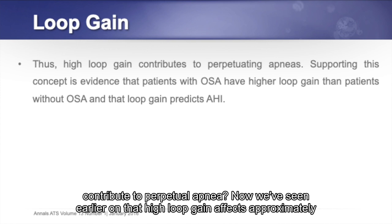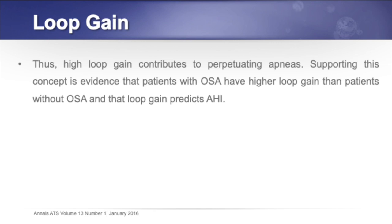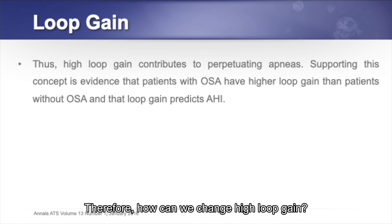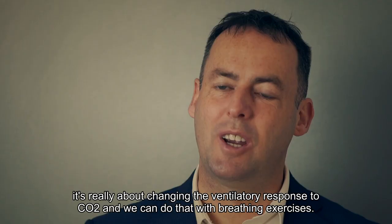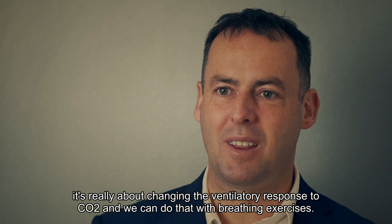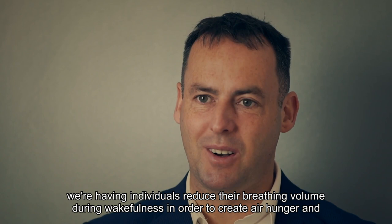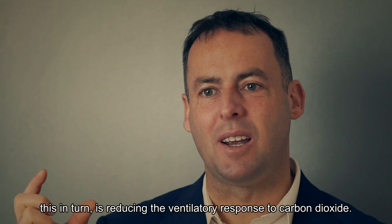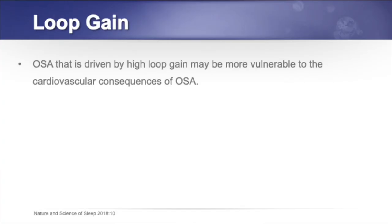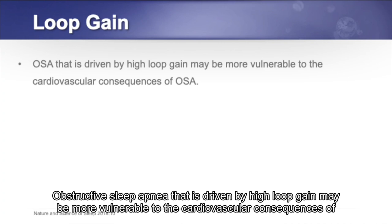High loop gain affects approximately 30% of people with obstructive sleep apnea. To change high loop gain, we need to change the ventilatory response to CO2 — through breathing exercises that normalize breathing volume. We have individuals reduce their breathing volume during wakefulness to create air hunger, which in turn reduces the ventilatory response to carbon dioxide.